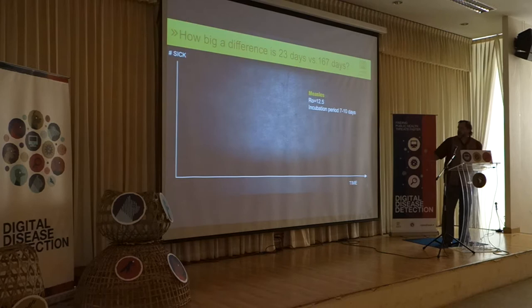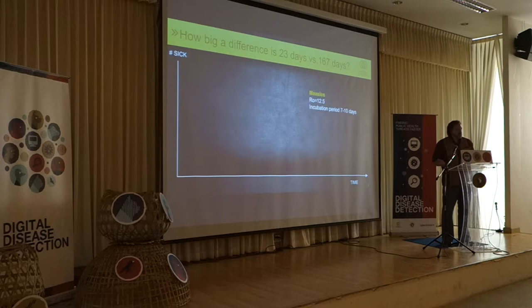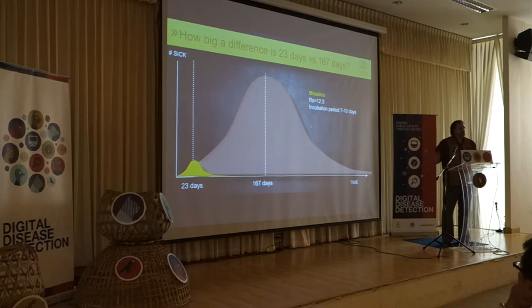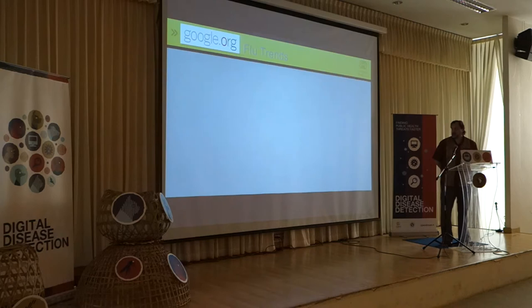If you're wondering what the difference between 167 days and 23 days would look like in a real-world situation: if you took a disease like measles and found an outbreak at 167 days, this is probably what the epi curve would look like. If we can find that first case in 23 days, that's what the resulting epi curve would look like. You can see there's a huge advantage to finding outbreaks faster in reducing the suffering and deaths of the population as a whole.